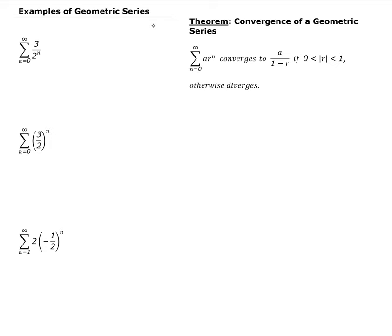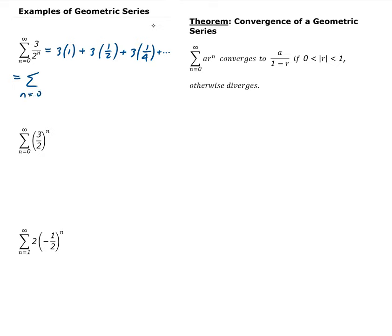Let's write out a few of the terms to get a better understanding of what we have here. When n is 0, we get 3 over 2 to the 0, which is 3 times 1. When n is 1, we get 3 times 1 half. When n is 2, we get 3 times 1 fourth, and so on. We can write this as the summation from 0 to infinity of 3 times 1 half to the power n.